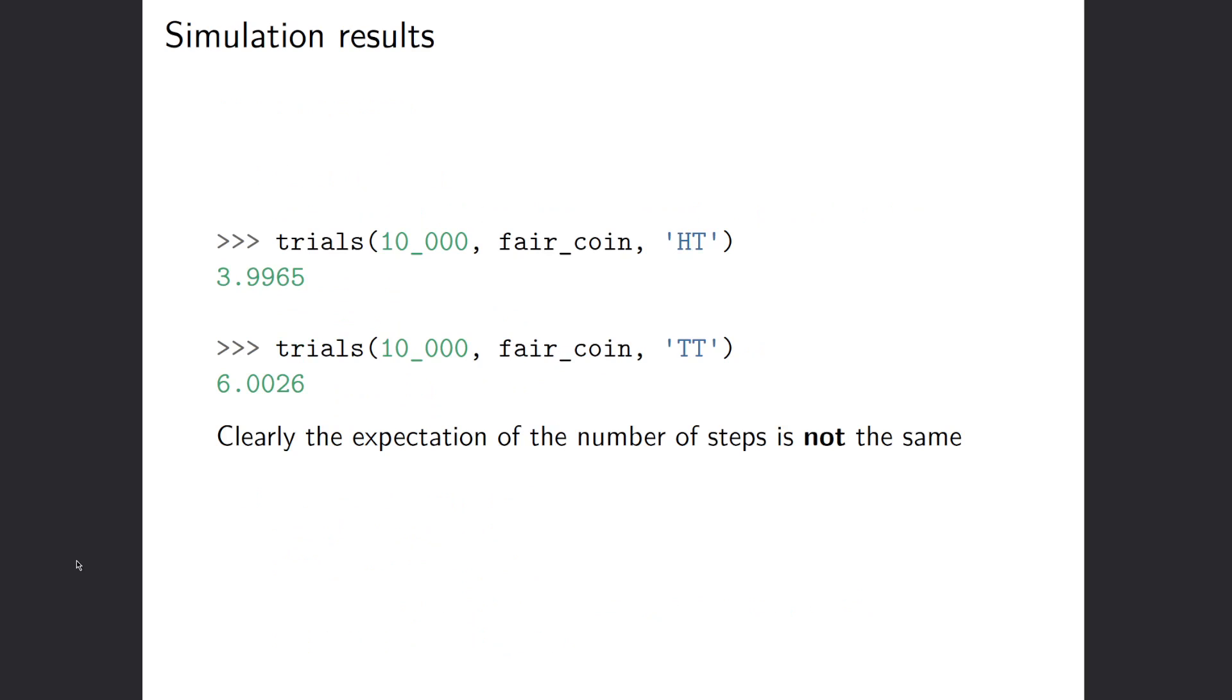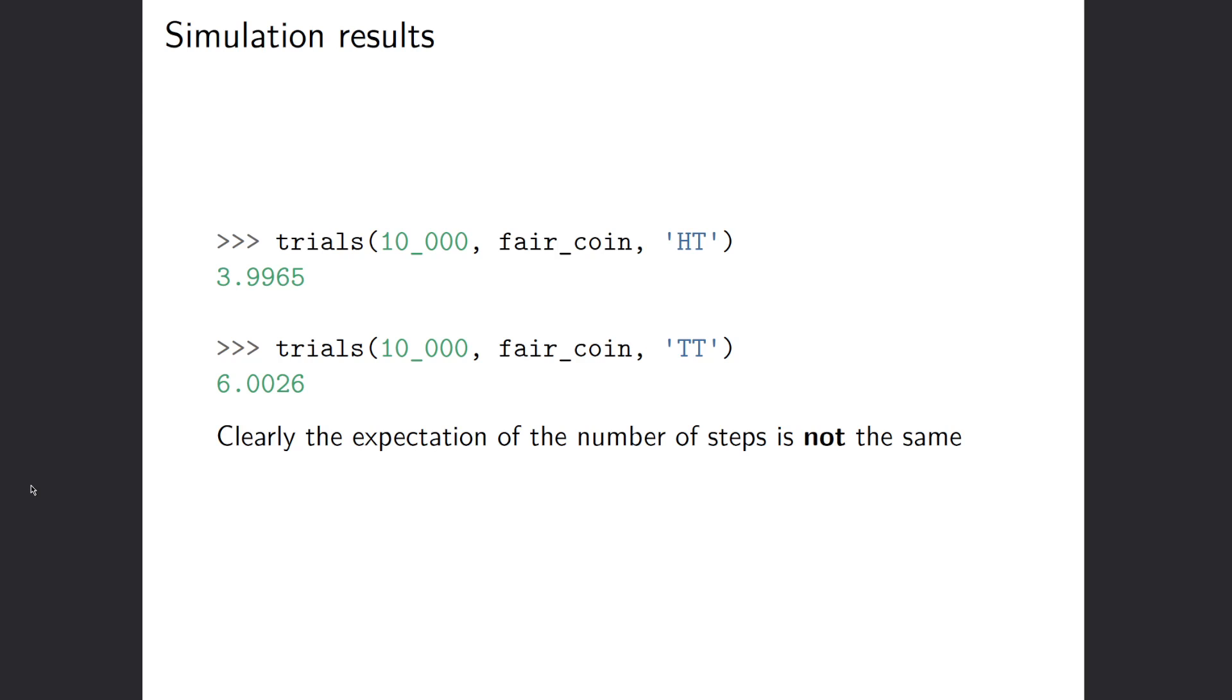So here are the results. And clearly, these are not the same. So heads tails is much more easy to get. The number of steps that we have to take, number of times we have to flip the coin in order to see this sequence is much lower at about four, than the number of times that we have to flip the coin in order to see tails tails, which is about six. So this is different than what we expected. So let's go into why that's the case.